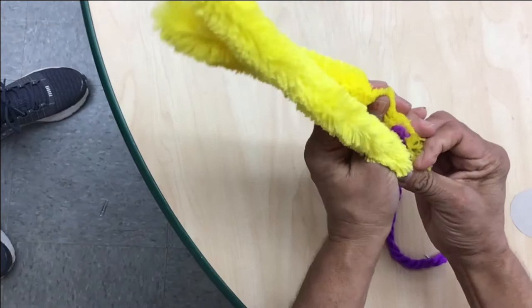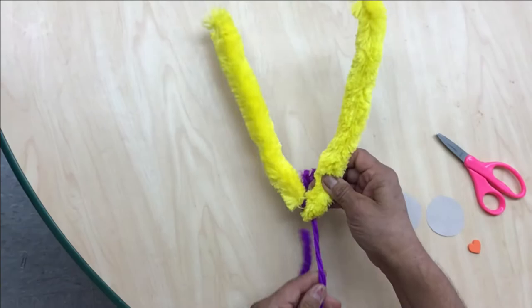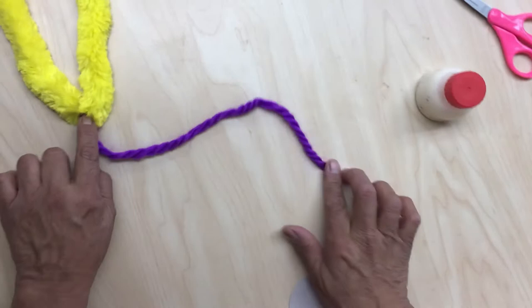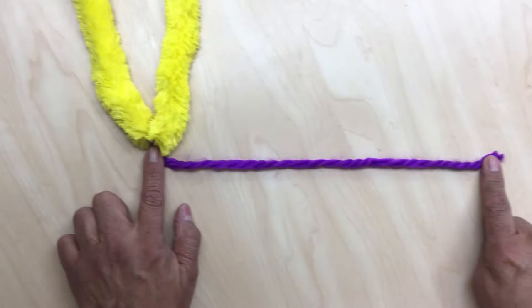Sometimes it's hard to make a knot, especially with this big pipe cleaner. Once you tie your yarn to the pipe cleaner, remember it has to be like a foot long.